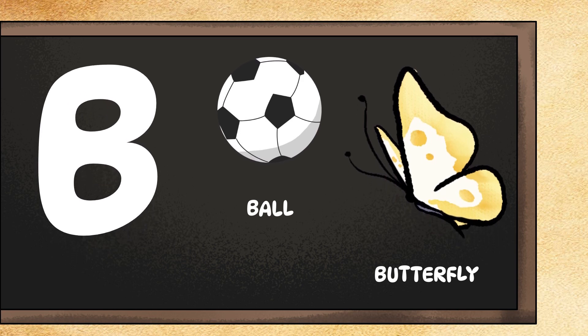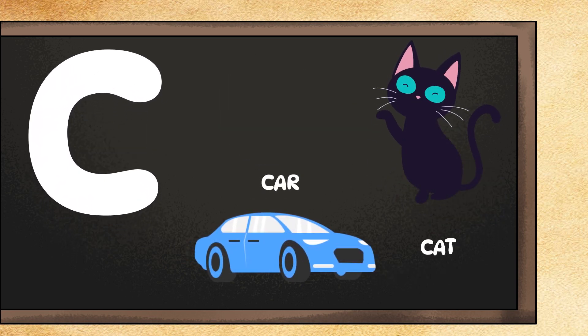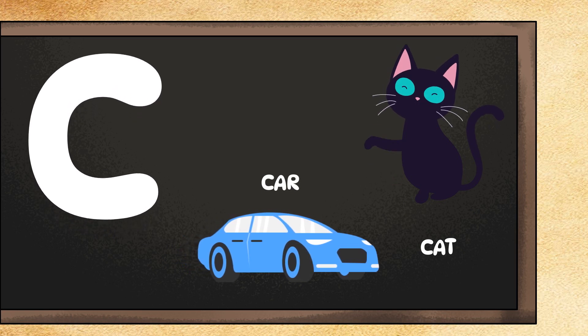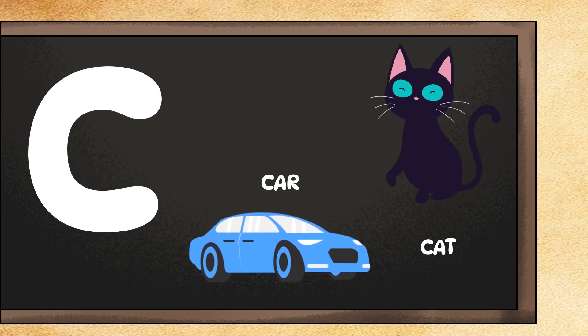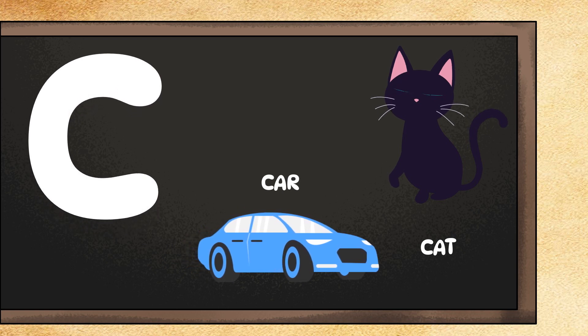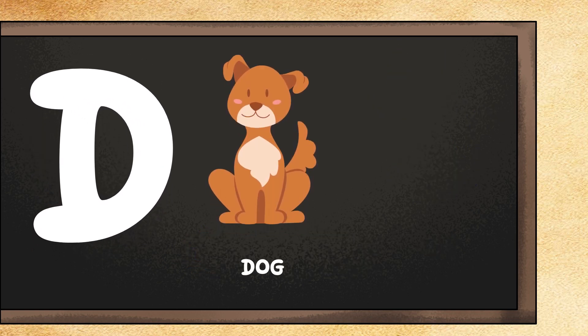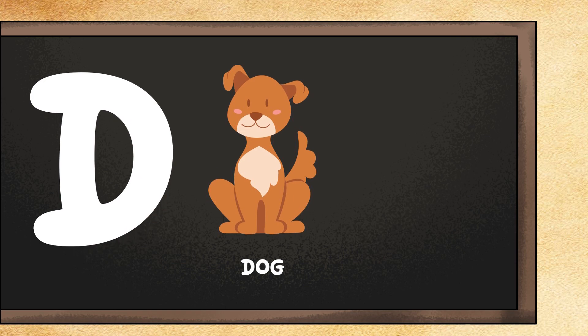Now let's move on to C. C is for cat. Can you say cat? Meow! C is also for car. Can you make a zooming car sound? Vroom vroom! D is for dog. Can you bark like a dog? Woof woof!